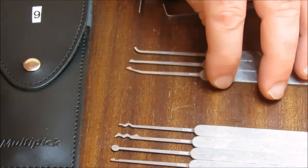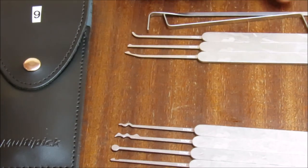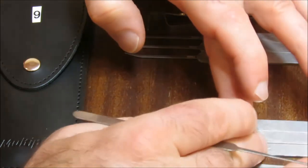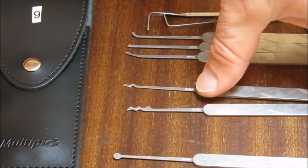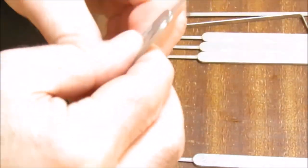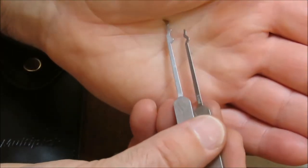Alright, so that's our three single pin picking picks. Those are our two turning tools at the top there. What else do you get for your money? You get two rakes. Now again they have gone conservative here. They have given us a snake rake and a Bogota equivalent, a triple peak.